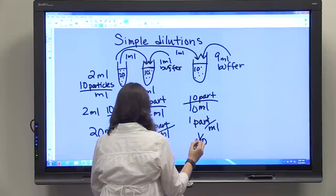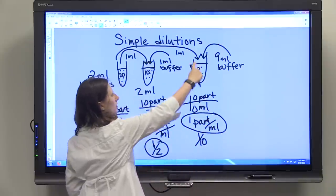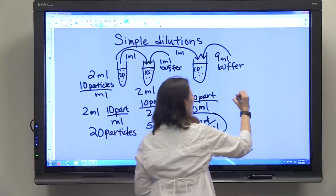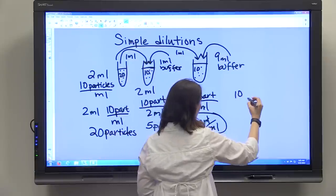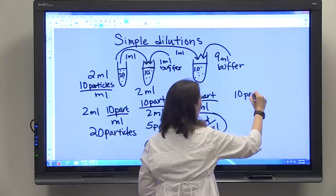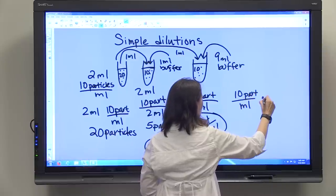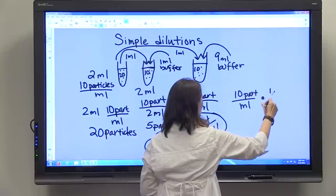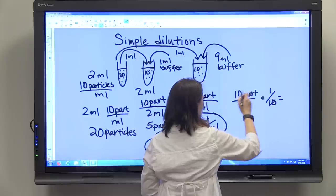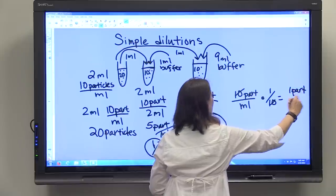And so another way that you can know what your final concentration is, we know this is a 1 tenth dilution, we know our original concentration, so this works with dilutions, and we know your original concentration, 10 particles per ml, and multiply that by your dilution factor, you're going to get 1 particle per ml.